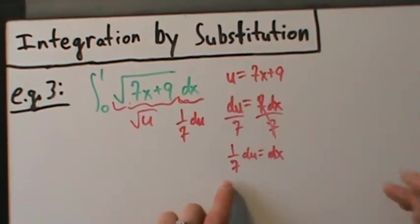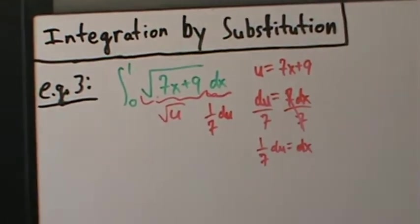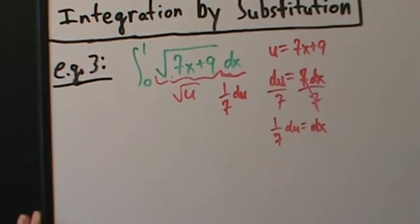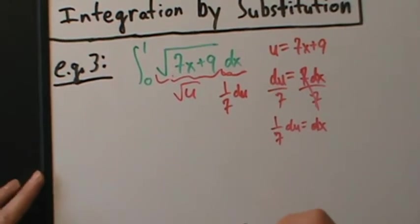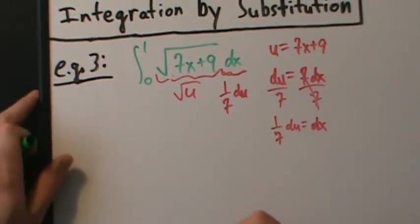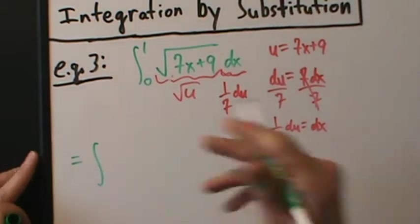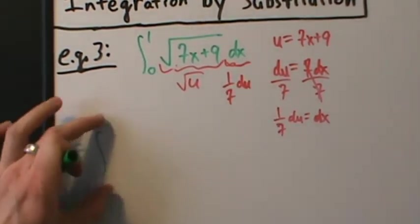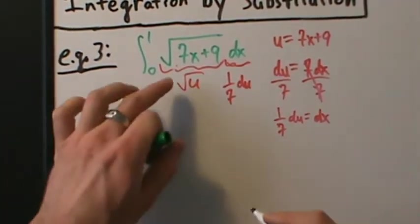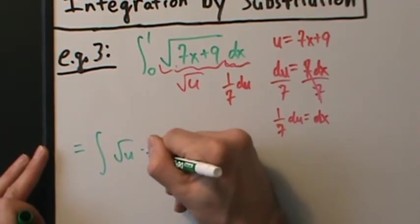Let's continue and rewrite the integral. I'm going to leave the limits alone for now and not write them yet. The integral becomes the square root of u times (1/7) du.